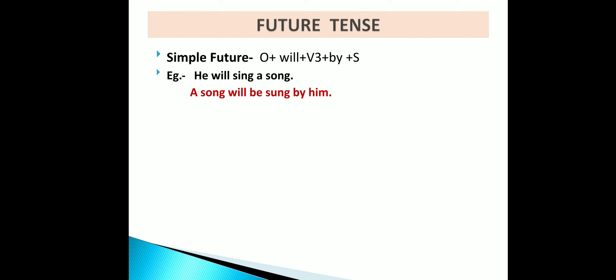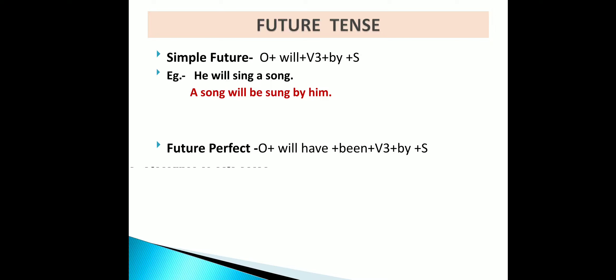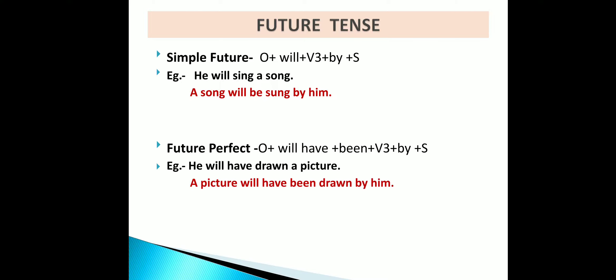For simple future tense, the passive structure is: object + will be + verb (third form) + by + subject. Example: 'He will sing a song' becomes 'A song will be sung by him.' For future perfect tense, the structure is: object + will have been + verb (third form) + by + subject. Example: 'He will have drawn a picture' becomes 'A picture will have been drawn by him.'